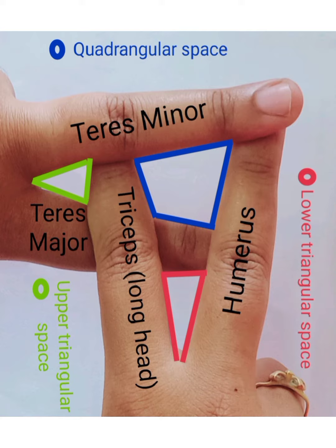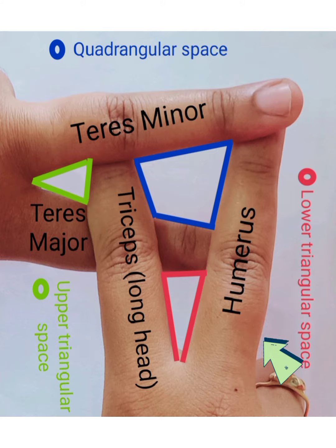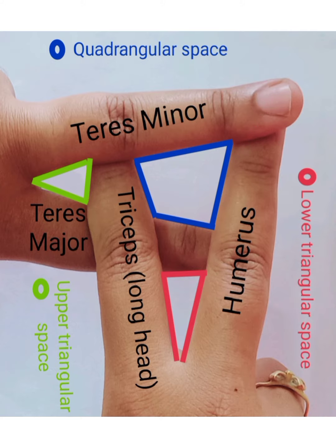Arrange your middle finger and index finger of both hands in such a way to form spaces in between. Assuming your middle finger as teres minor and the index finger as teres major, and the other middle finger as humerus and the index finger as long head of triceps, we can see three spaces: a quadrangular space and two triangular spaces.